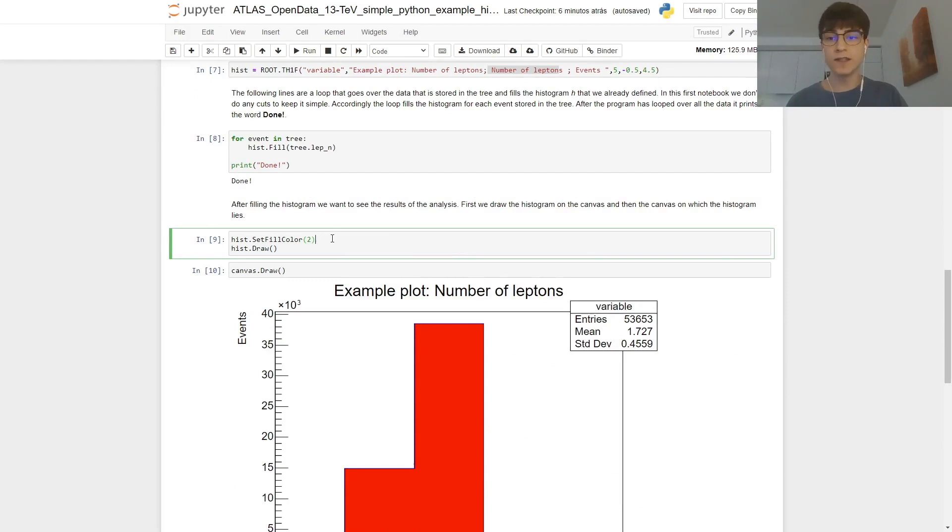Now just for a bit of customization, we set the color as red by doing hist.SetFillColor and two, and then we need to draw the histogram. So hist.Draw, and then finally remember that it's always dependent on the canvas. So we do canvas.Draw as well.